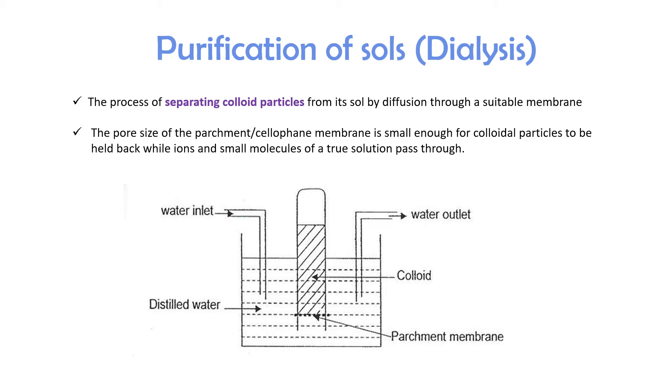So here is the typical setup for a purification of sol, where we have a continuous flow of water in and water out, we have the distilled water, and we have the parchment membrane here, and the test tube that we have here is inverted, so we should have the colloid solution here, and the colloid should be held back in this test tube, but the ions and molecules can pass through.